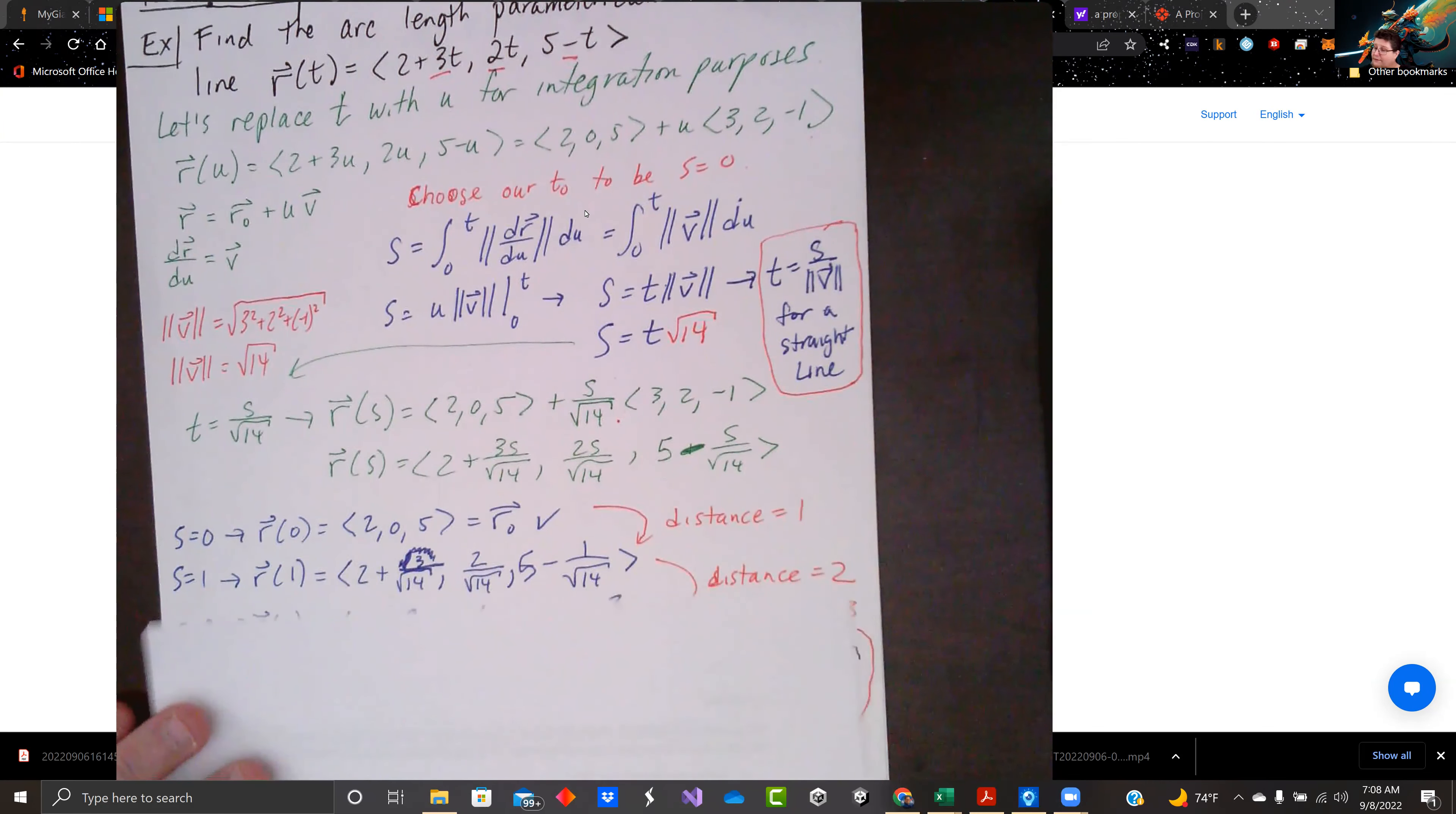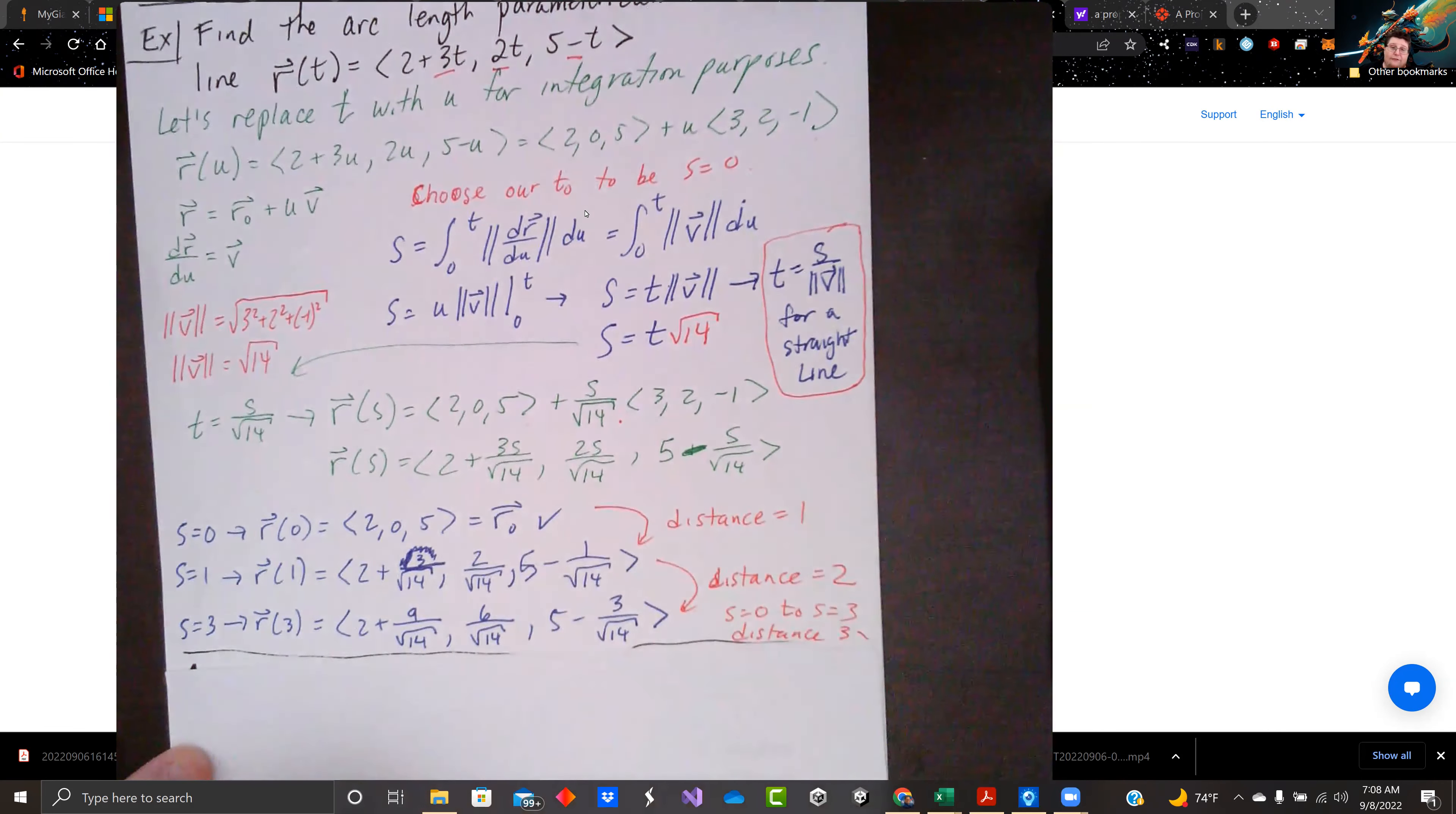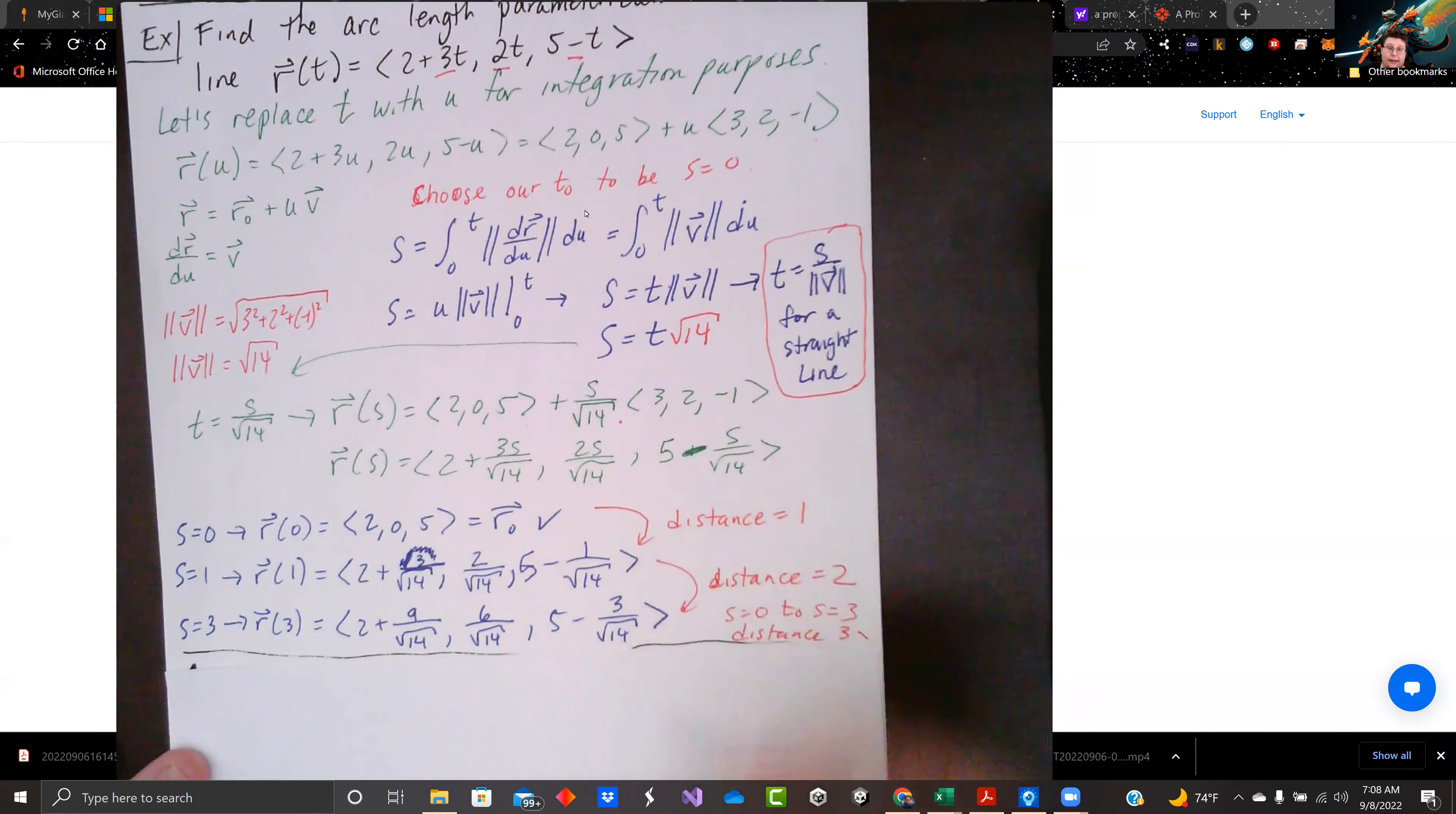So if we look at a little different time steps, if we do s equals 0, we're stuck with, we have r naught still at (2,0,5). If we do r(1), we've got 2 plus 3 over square root of 14, then 2 over root 14, and then 5 minus 1 over root 14.